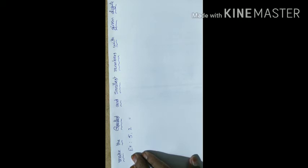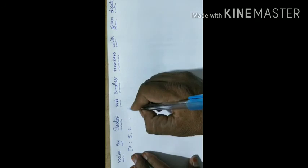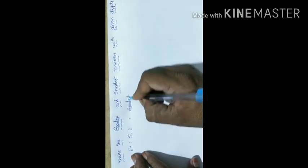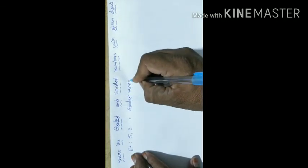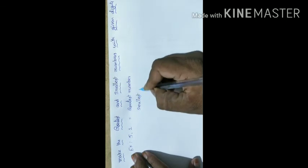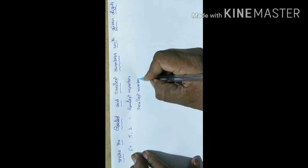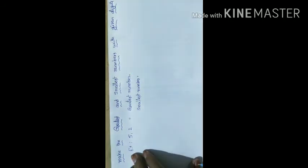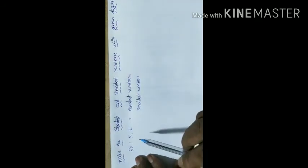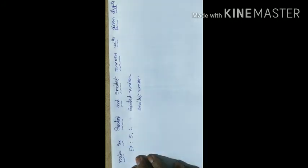In those numbers, which is the smallest number and which is the greatest number? If you observe here, 5 and 2 are the digits. With these digits, 52 and 25 — two numbers are possible to write. Number 1 is 52.